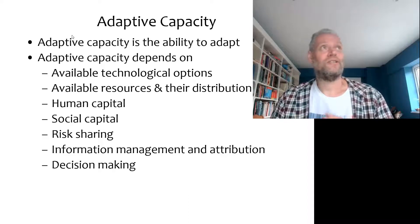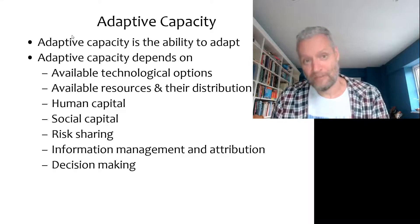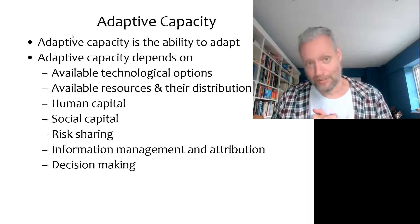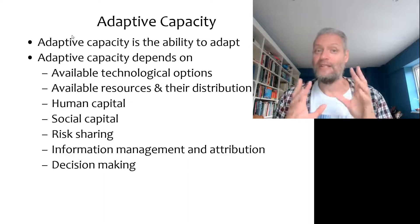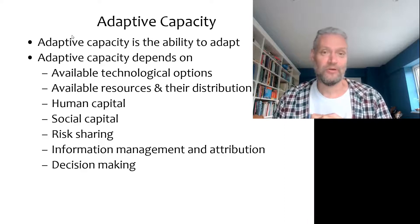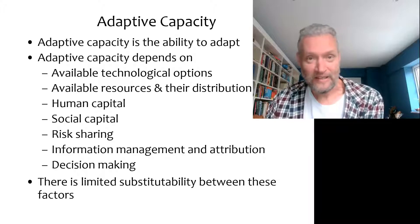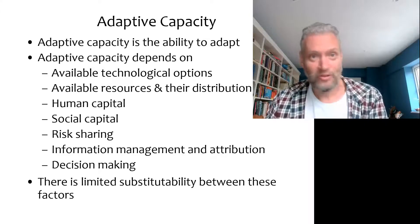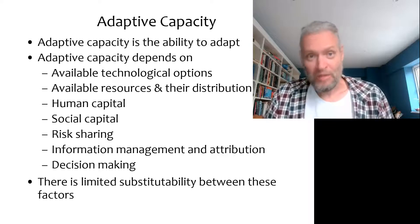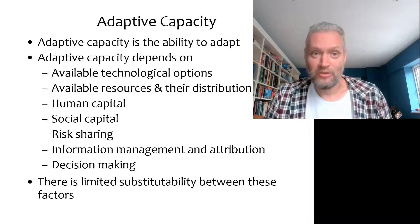The third component of adaptive capacity is the ability and willingness to mobilize those economic resources to deploy those technologies. Rather than discussing this in abstract terms, I'm going to compare the Netherlands to Bangladesh. Both countries are low-lying deltas, both are very densely populated, both are vulnerable to floods from the sea as well as from rivers, and in both countries big storms occasionally sweep through.